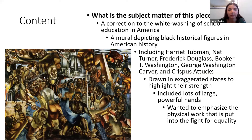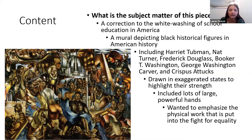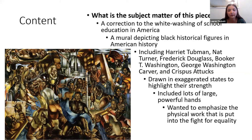For the content of this mural, he wanted to correct the whitewashing that had occurred in American education. The mural depicts many Black historical figures of American history — Harriet Tubman, Nat Turner, Frederick Douglass, Booker T. Washington, George Washington Carver, Crispus Attucks, and many others.